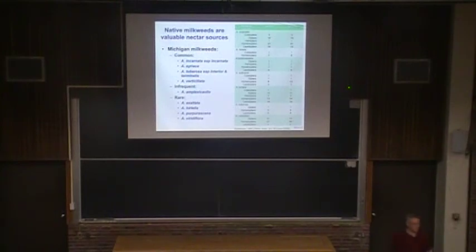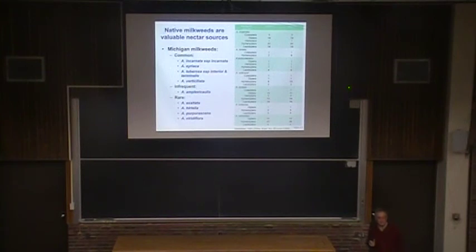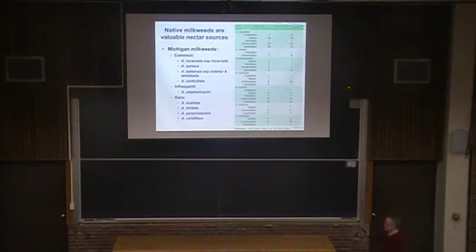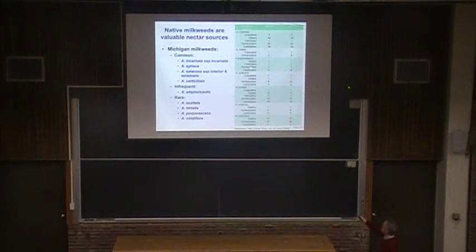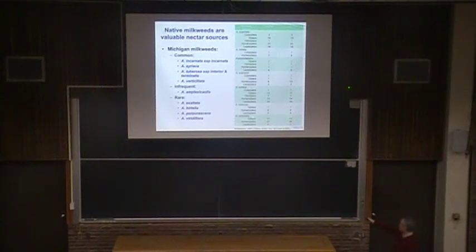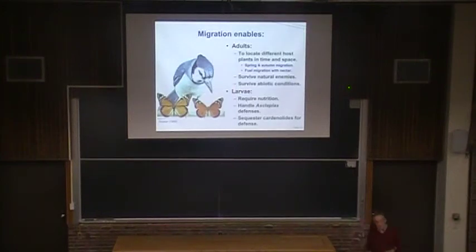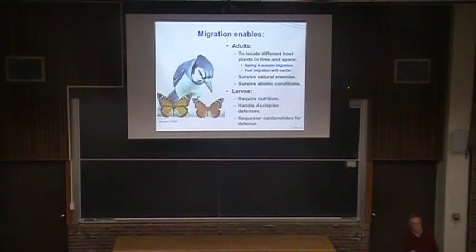To put this up because a lot of people in Michigan are interested in growing milkweeds — these are all Michigan milkweeds, and this is a wonderful paper published in 1891. It always drives me nuts when students say they only access literature from the last ten years. This is a great paper, and all these data on different insect groups visiting different milkweed species came from it. The common milkweed has lots of bees, wasps, and butterflies visiting it. Migration is enabling adults to locate different host plants through the spring migration and to fuel their migration with nectar from flowers.